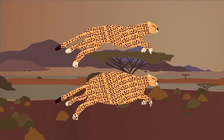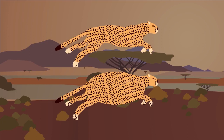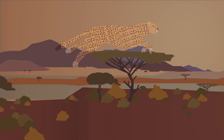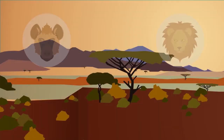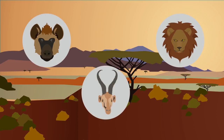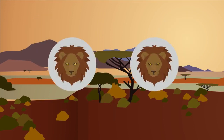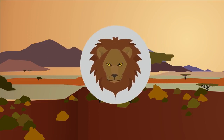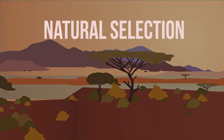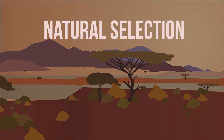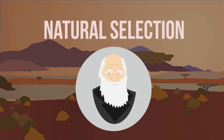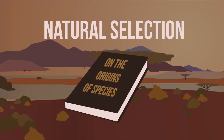Which one of these cheetahs do you think will win the race for food? In nature, all organisms compete with each other for resources in order to survive. Competition between members of the same species is what makes organisms evolve. This theory of competition and survival of the fittest is called natural selection, and was originally proposed by Charles Darwin in his book On the Origin of Species in 1859.